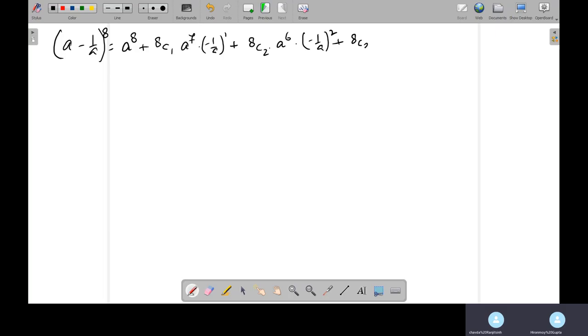Square. 8C3, K to the power 5, minus 1 by A whole to. 8C4, K to the power 4, minus 1 by A, K to the power 4. Plus, that is, this is not A, this is 8. Sorry. One minute. So this is my 8. This is my 8.